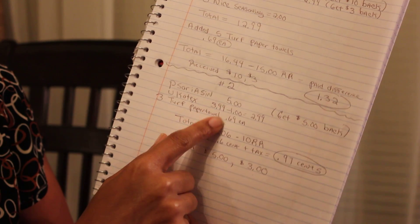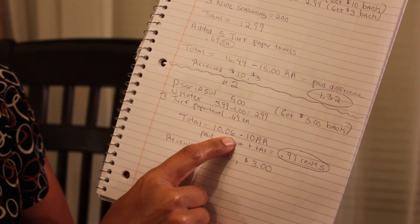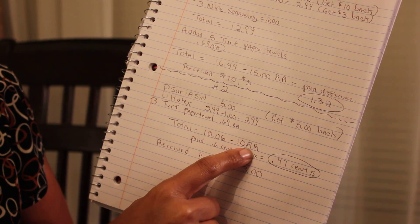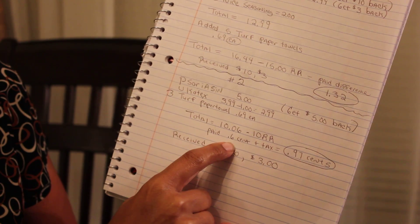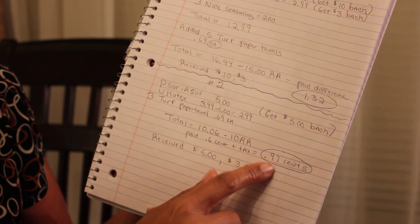So I gave her my $10 back and I had to pay six cents plus tax, so that was 97 cents. From this I received the $5 and the $3 in register rewards.